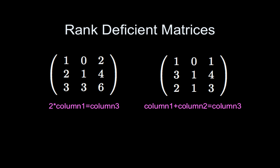So here the scalars are just 1, so 1 times column 1 plus 1 times column 2 is column 3. So this is also rank-deficient.